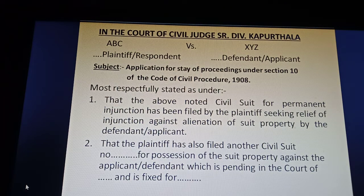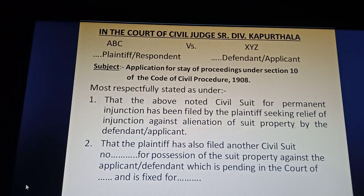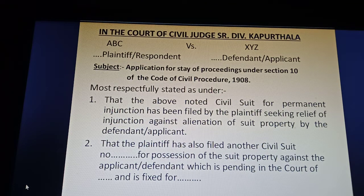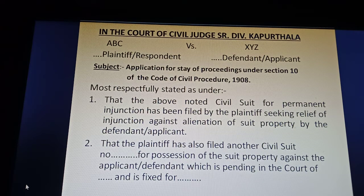The submission should begin: 'Most respectfully stated as under.' Ground one: that the above-noted civil suit for permanent injunction has been filed by the plaintiff seeking relief of injunction against alienation of suit property — so the relief claimed in the present suit is permanent injunction against the defendant concerning the alienation of suit property.